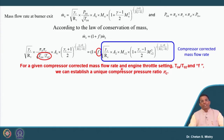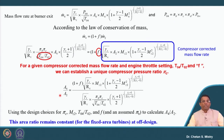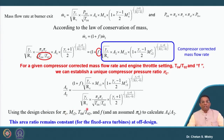Simplifying the equation: the area ratio — outlet area of the combustion chamber to inlet area of the compressor — remains constant because we are not changing the area of the turbine nozzle. So if we have information about the pressure ratio, Mach number, T04/T02, and the fuel-air ratio, we can calculate what the area A4/A2 will be.